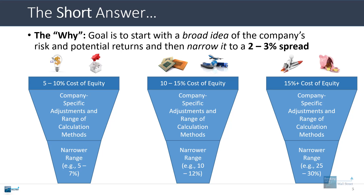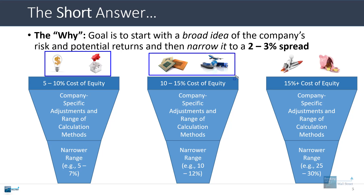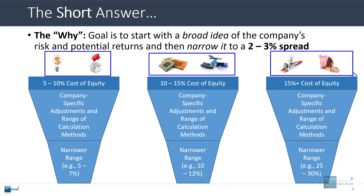The first category — 5% to 10% — covers somewhat less risky companies: utilities, real estate investment trusts, for example. The second category — 10% to 15% — covers technology companies, industrial and transportation firms. The third category — 15% plus — covers startups and high-growth companies, maybe some distressed companies, and companies in emerging or frontier markets.